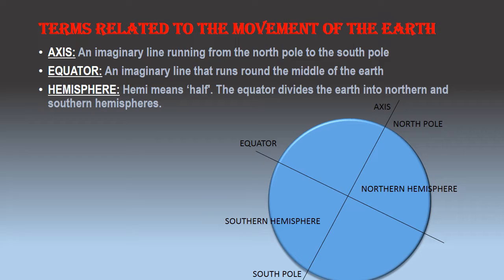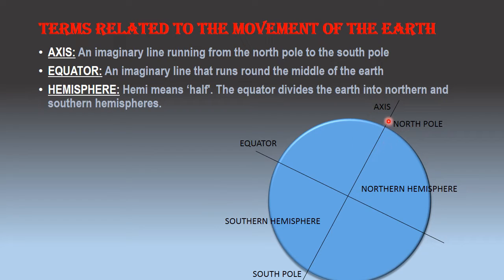When we talk about the earth and its movements, we use some special terms and words. First look at the picture. At the top there is a north pole and at the bottom there is a south pole, with a line running between them. This line is called the axis. Axis is an imaginary line running from the north pole to the south pole through the center of the earth. The earth is tilted 23.5 degrees on its axis. The different seasons and climatic conditions on the earth are caused by the tilt of its axis. Places located at the north pole and south pole are cold throughout the year because they do not receive any direct heat or light from the sun.